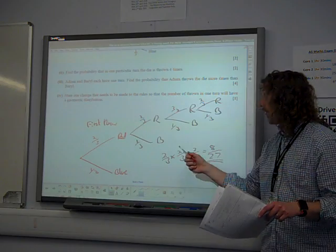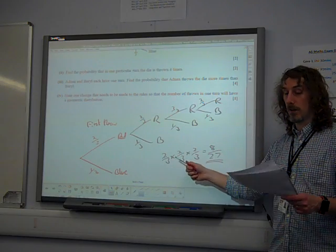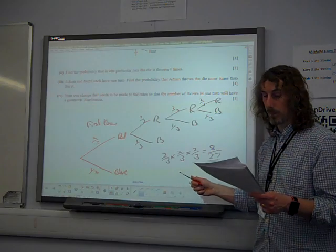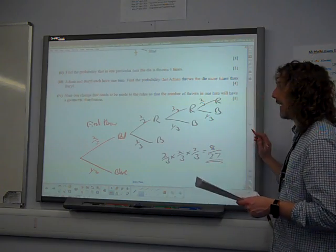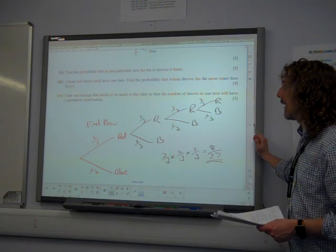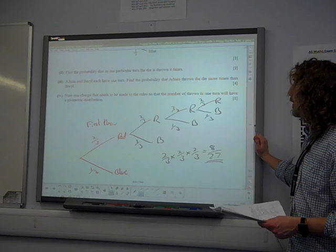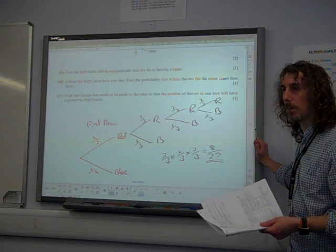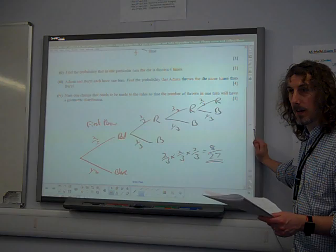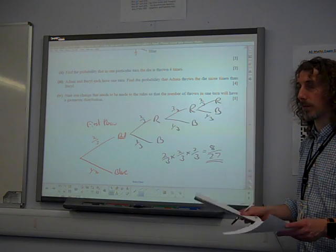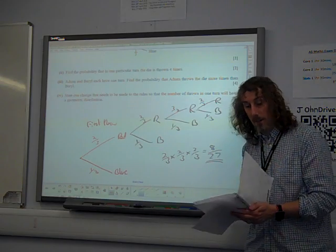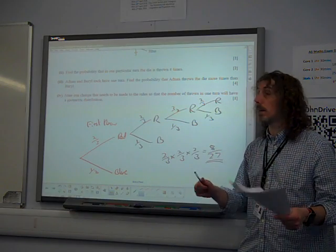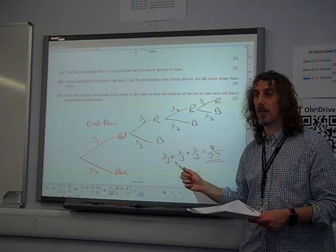Right. So there we go. But two-thirds to the power of four scored zero. Straight away scored zero. Right. Part three. This is where it got very exciting. Adnan and Beryl each have one turn. Find the probability that Adnan throws the die more times than Beryl. This is just stupid. I like this. This was the one bit of this paper, the only bit of this paper, that I actually stopped and thought about for a moment before I embarked on doing any answer.